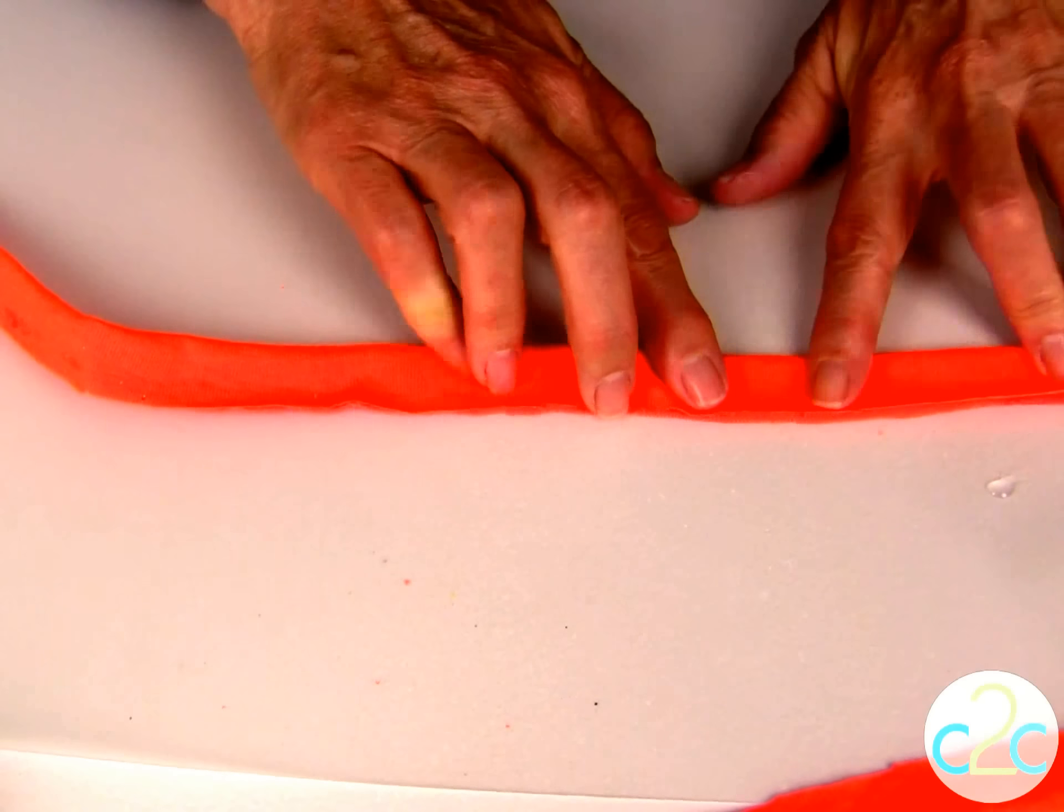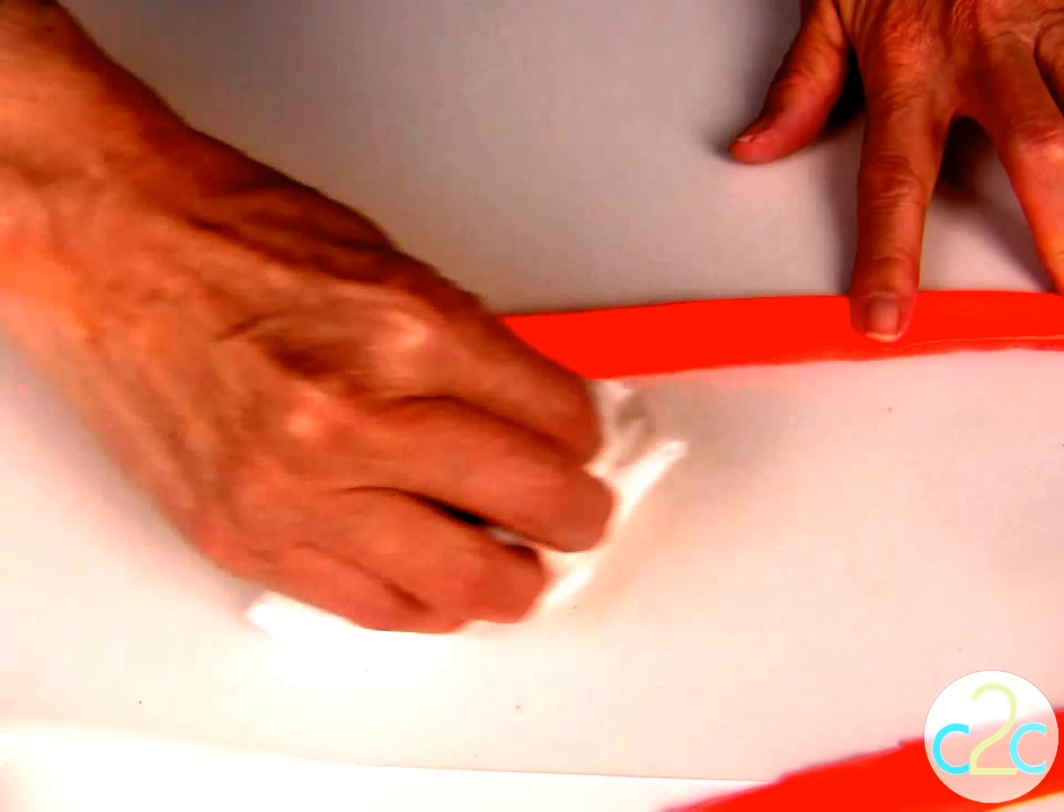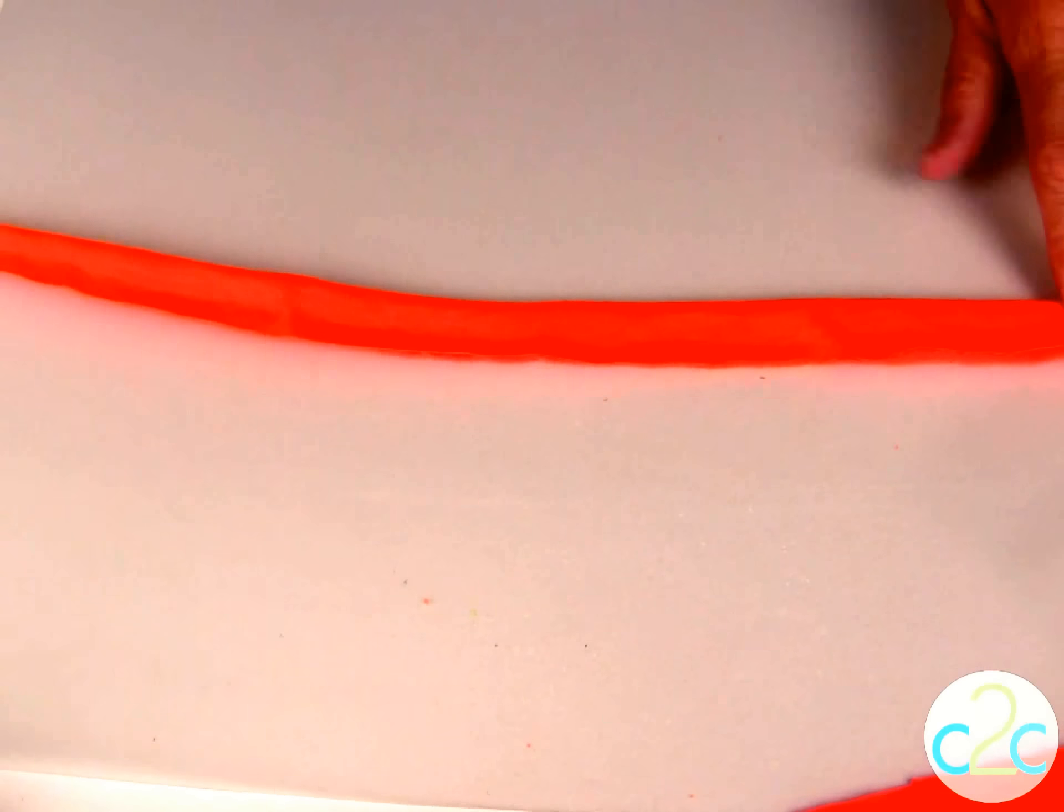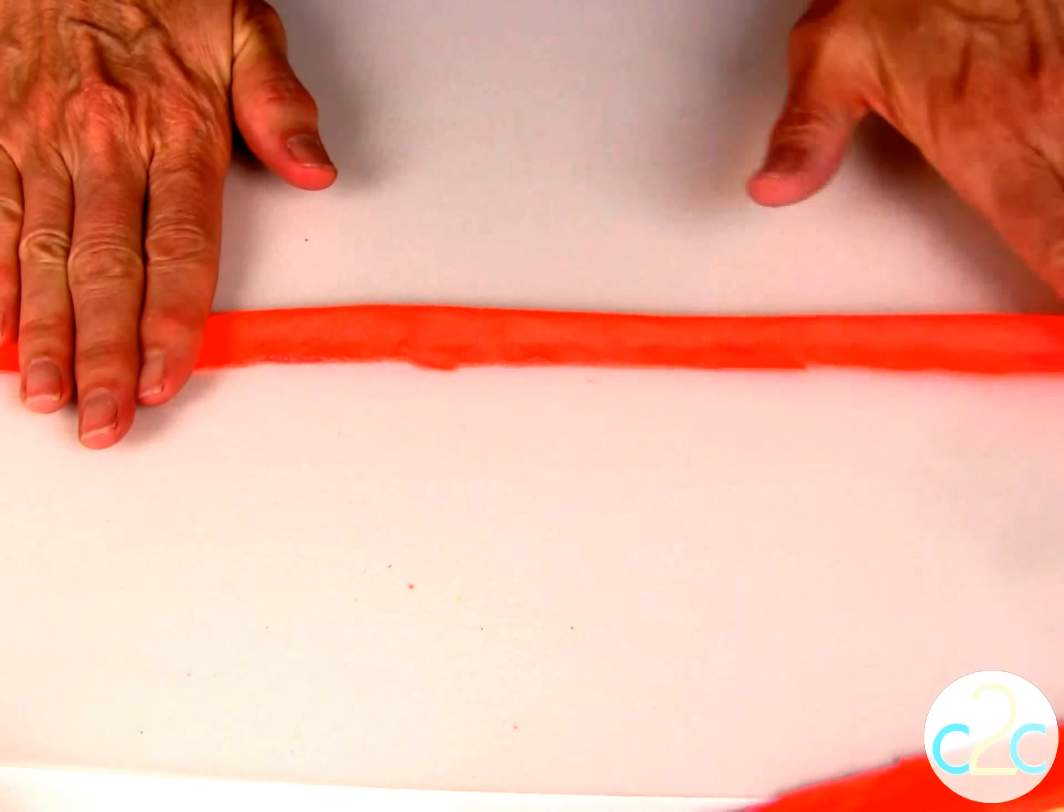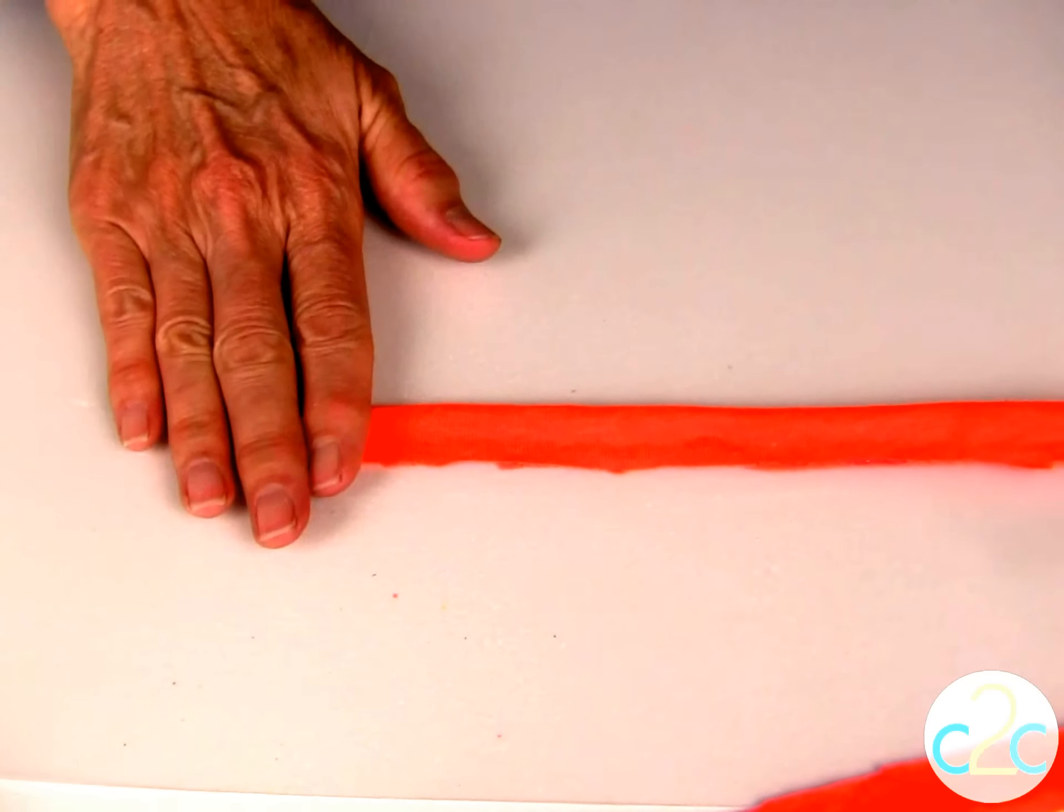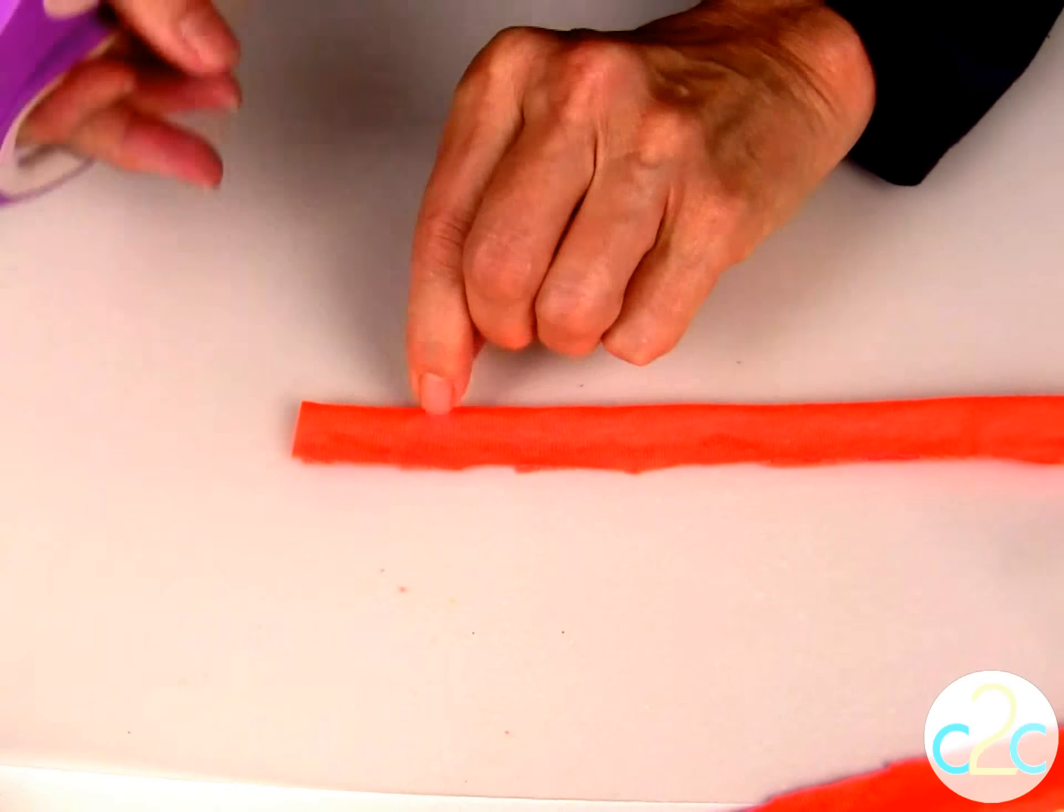If I have any glue on my work surface, I do grab my wet wipe and wipe everything clean. So I come back and just check to make sure that everything is glued together and I am going to start cutting.